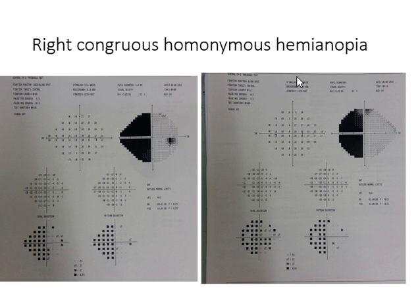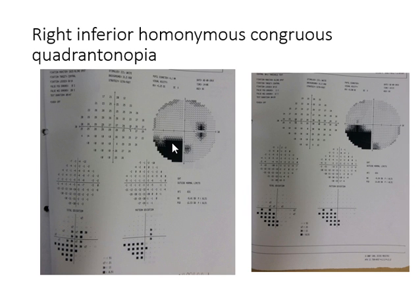Because it is symmetrical in both eyes, it is homonymous congruous hemianopia. This is a neurological field defect and the pathology has to be on the left side in the occipital region. Because it is congruous — the more symmetrical it is, the more the pathology is in the occipital lobe — this needs an urgent referral to the stroke clinic.